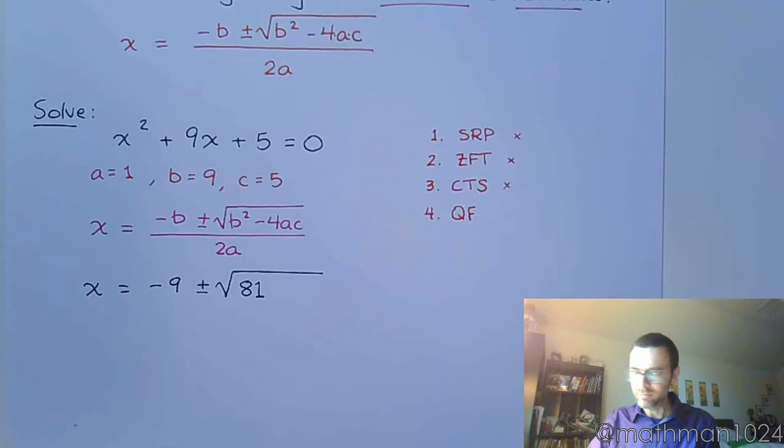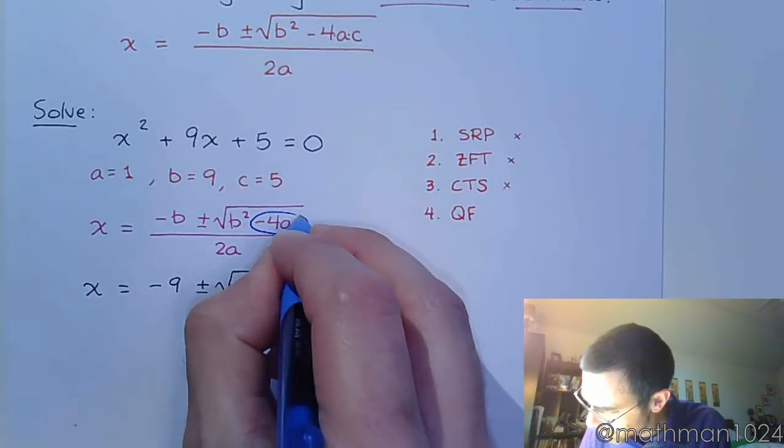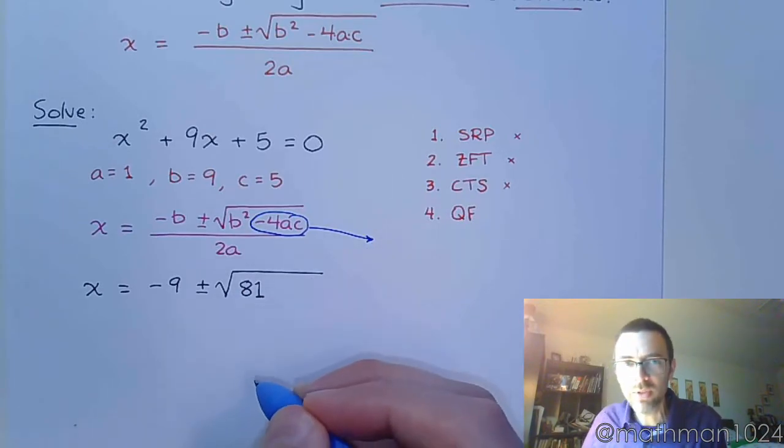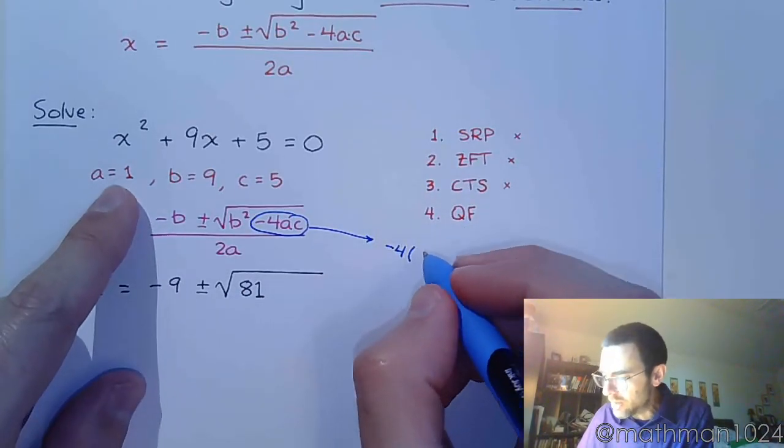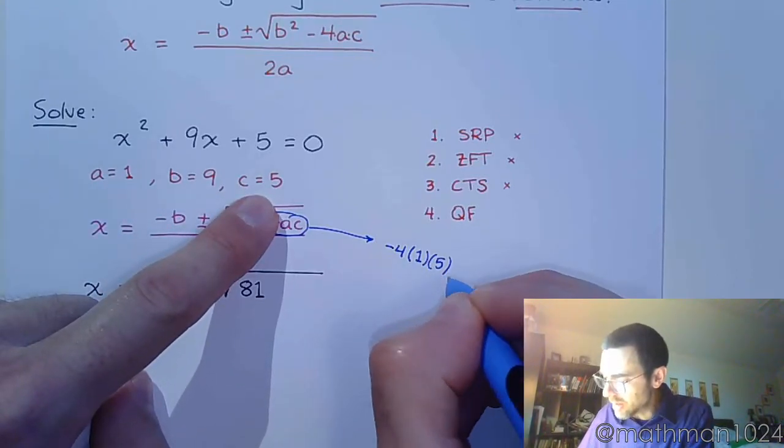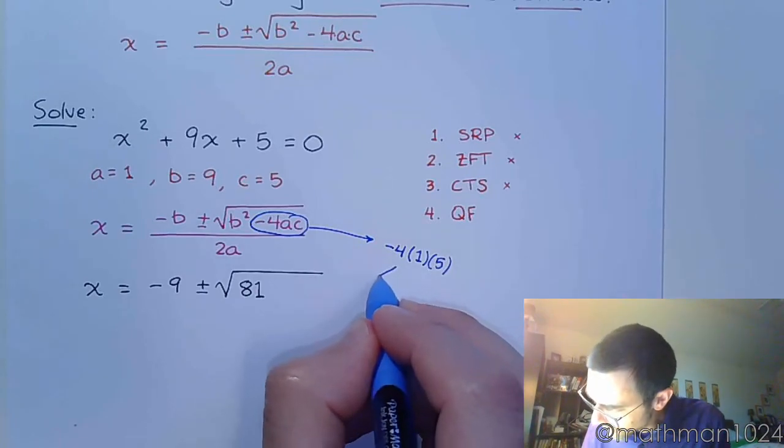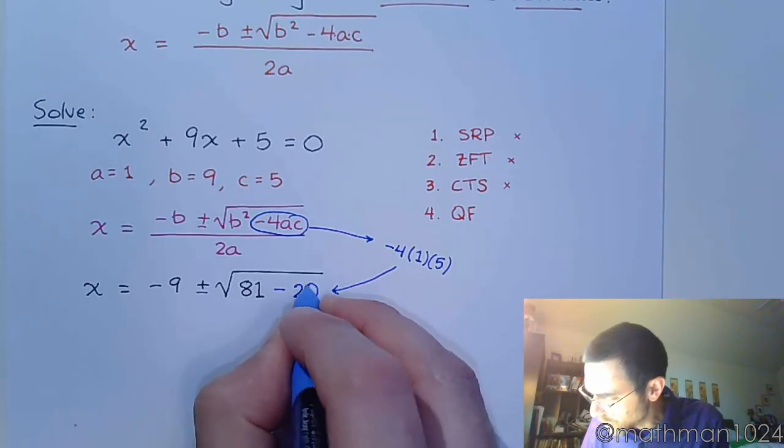Now, here's what I like to do. I like to take this minus 4ac and kind of work him off to the side here. So I need to do negative 4 times a times c. And when I work all that together, I end up with negative 20.